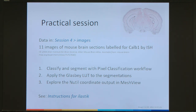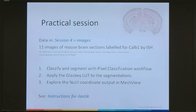The practical session is similar to the QuickNII one in that you have access to some images in the session 4 folder. We're going to classify and extract segmentations with the pixel classification workflow. One thing to note about Elastic is that when you export segmentations, the images are always black by default — this is because a black colour has been applied to all classes by default. Even though it has been classified, it doesn't look like it has been, which is why we have to apply the Glasby lookup table to apply different colours to the different classes.